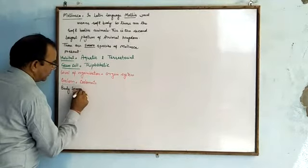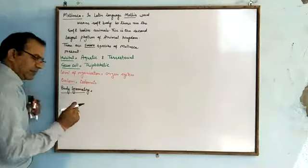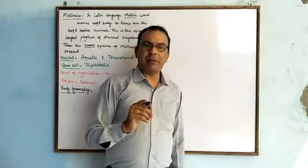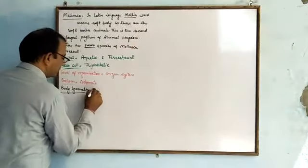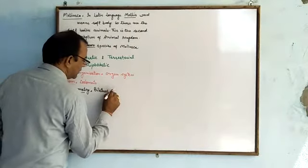Body symmetry: if we cut these animals through the center, both halves are equal. So they have bilateral symmetry.